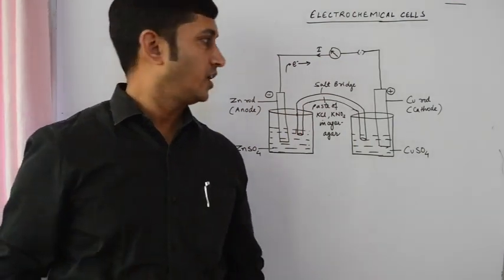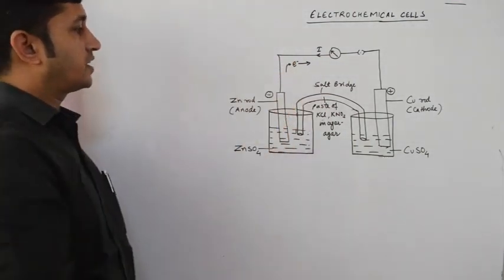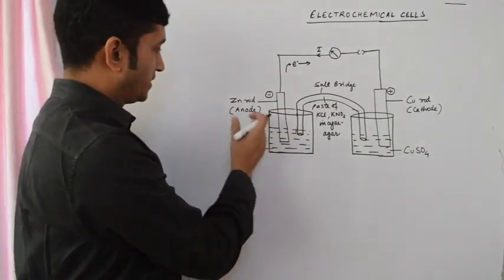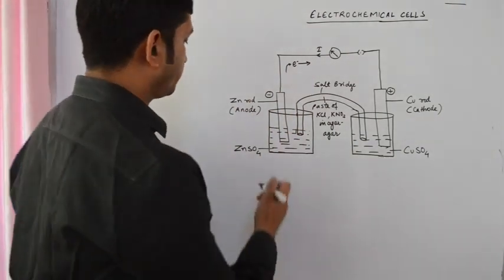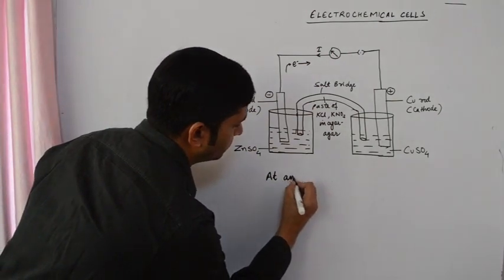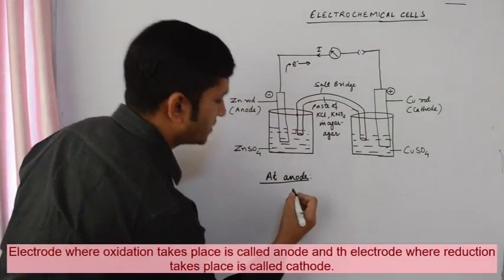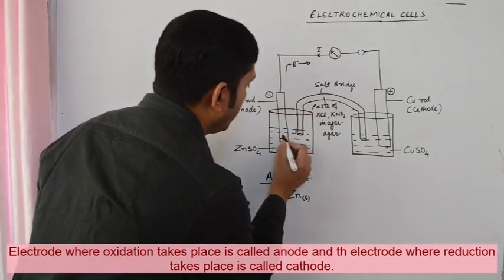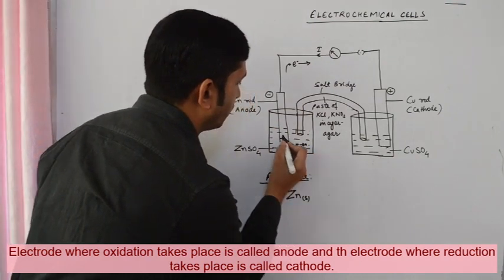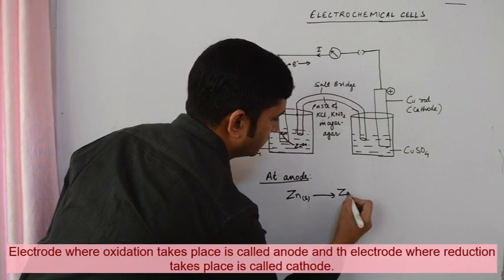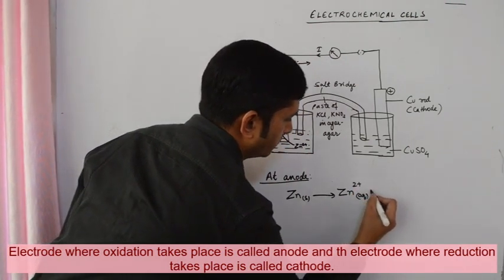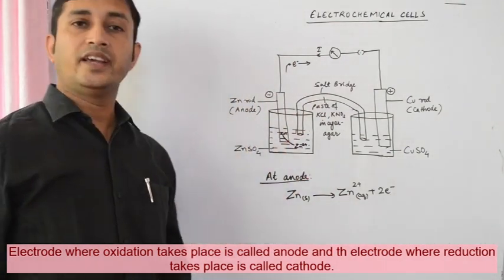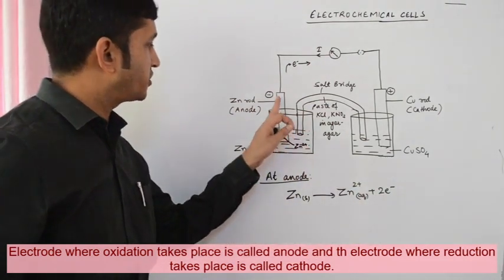Now let us try to understand these observations. In the left-hand side, that is the oxidation half cell, zinc has more tendency to get oxidized. So at the anode, zinc atoms from the zinc rod lose electrons and come into the solution in the form of zinc ions. As a result, the concentration of zinc ions in the solution will increase, and these electrons will get accumulated over the rod.